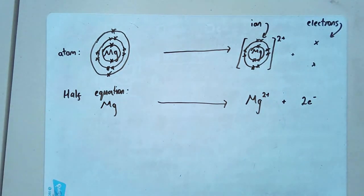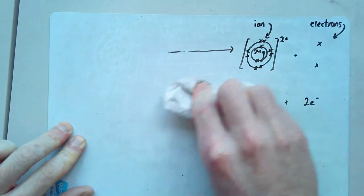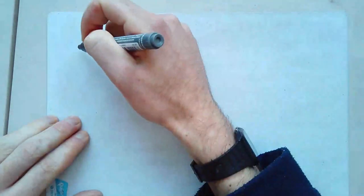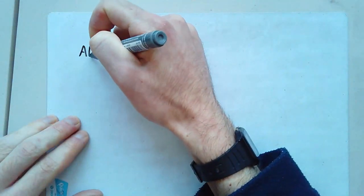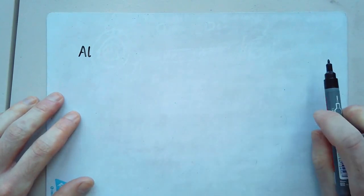What I'd like you to do next, one more example to try before you just do some free practice. What I'd like you to do is have a go at doing that for me, but for Al, aluminium. Now, if you're feeling comfortable and confident, you can jump straight to the half equation. If you're not sure about how to do that, draw the full atom, draw the full ion, draw the electrons, and then write out the half equation. Pause the video. And when you're ready, press play.